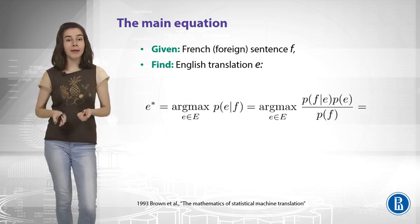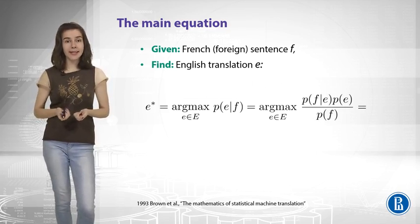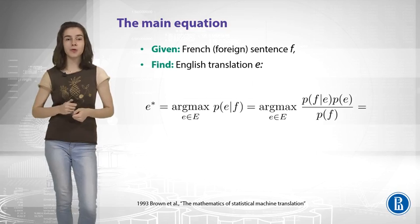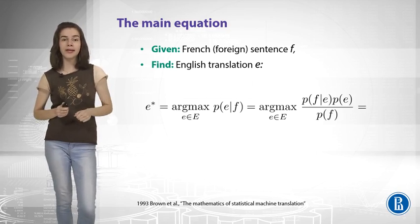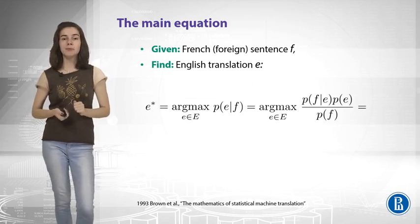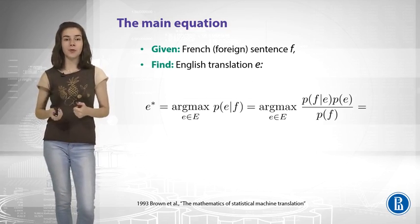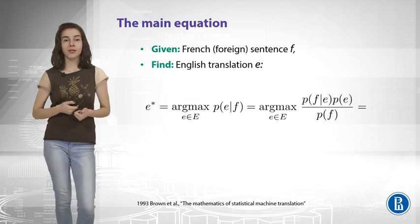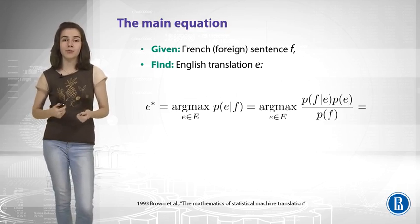Now, let us apply Bayes' rule here. So instead of computing the probabilities of E given F, we would better compute probabilities of F given E and multiply it by some probability of the English sentence, and also normalize it by some denominator.